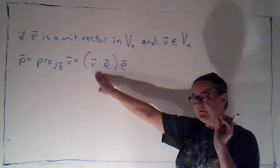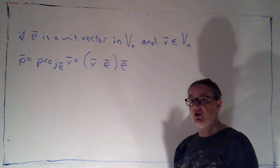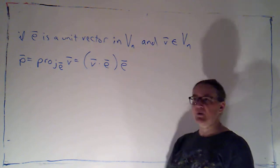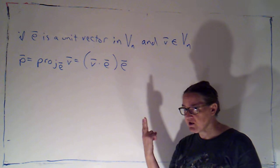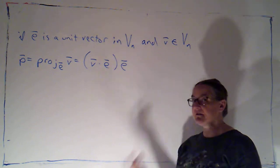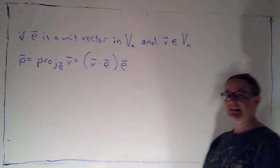Now we proved that in the very specific case that the angle between V and E is acute. There are actually five cases we could consider. The angle could be acute, the angle could be obtuse, and the angle could be zero or pi over two or pi.